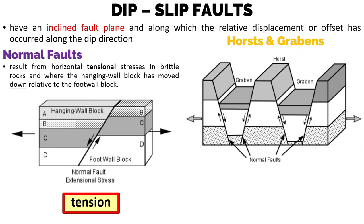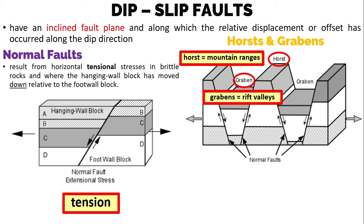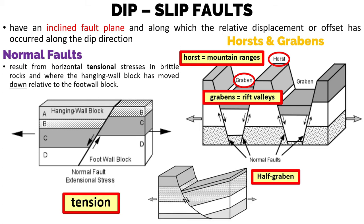In areas where tensional stress has recently affected the crust, the grabens may form rift valleys and the uplifted horst blocks may form linear mountain ranges. A normal fault that has a curved fault plane with a dip decreasing with depth can cause the dropped-down block to rotate, forming a half-graben. This is because it is bounded by only one fault instead of the two that form a normal graben.